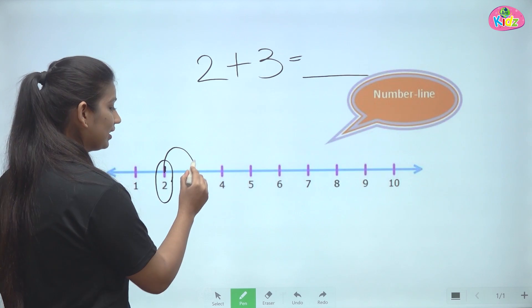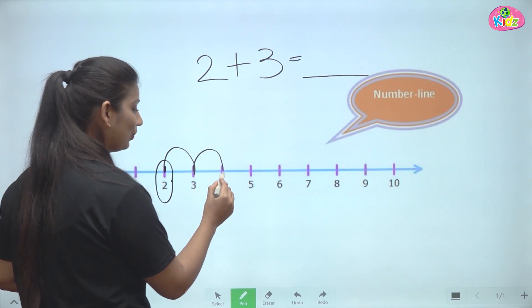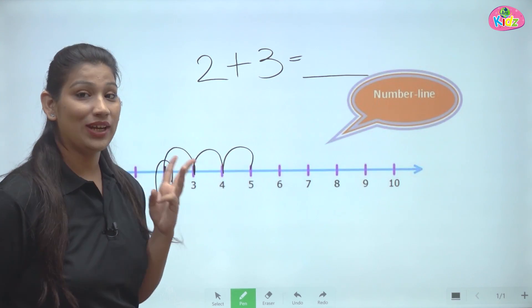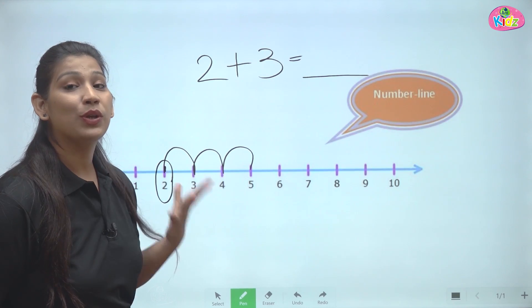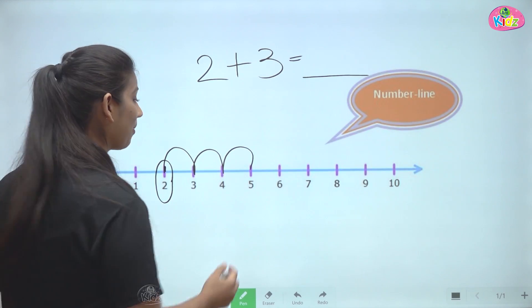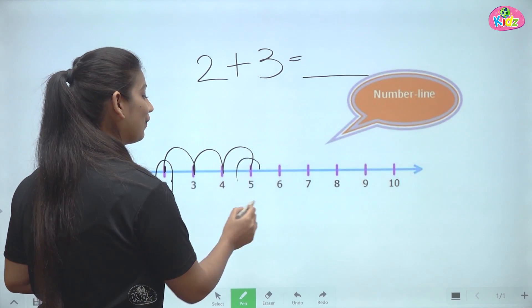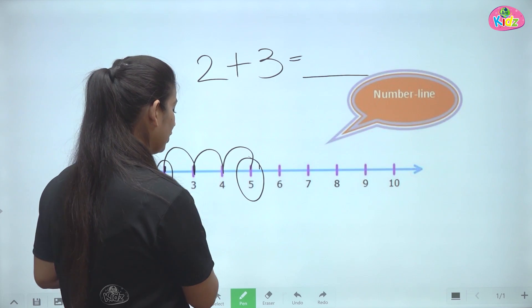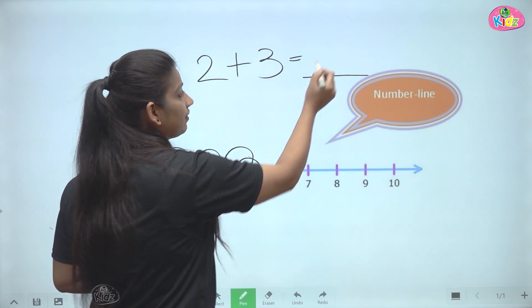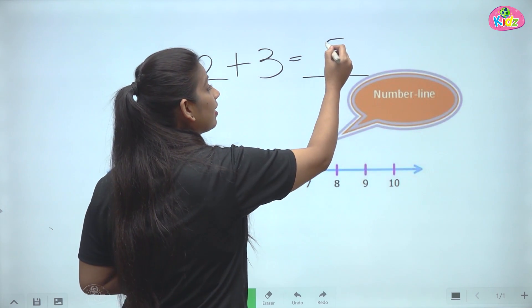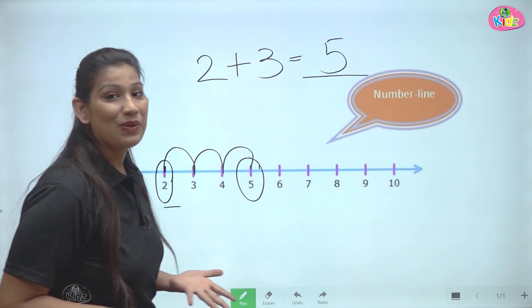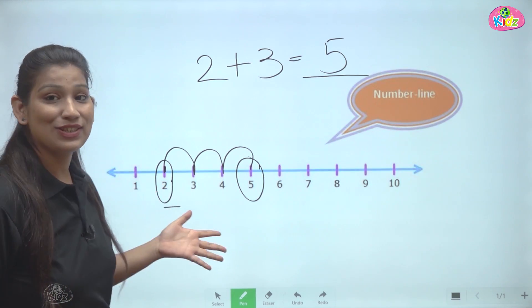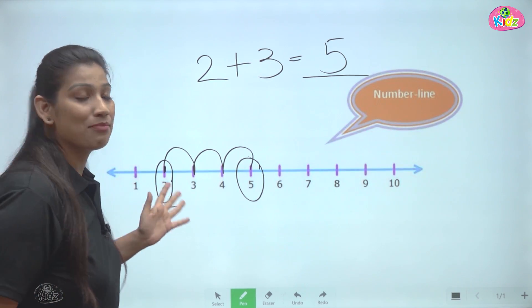One, two, three. After jumping three times, we got to number five — we reached number five. So two plus three is five.